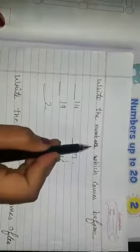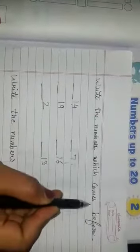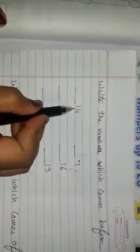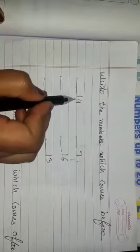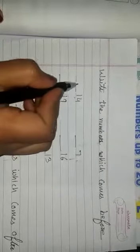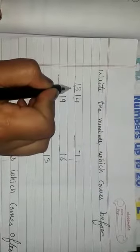Write the number which comes before. What comes before 14? 13. One, three, 13.